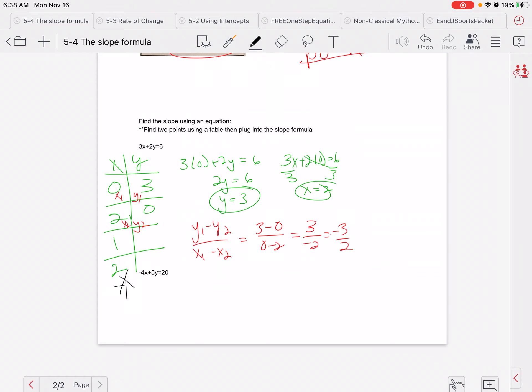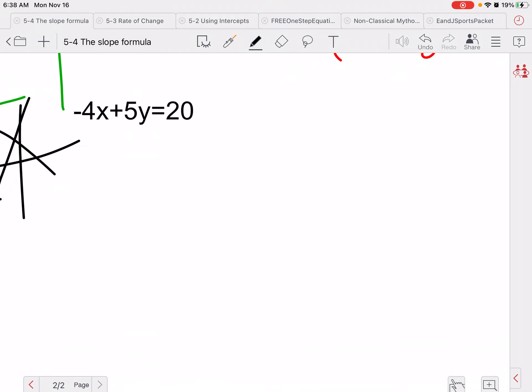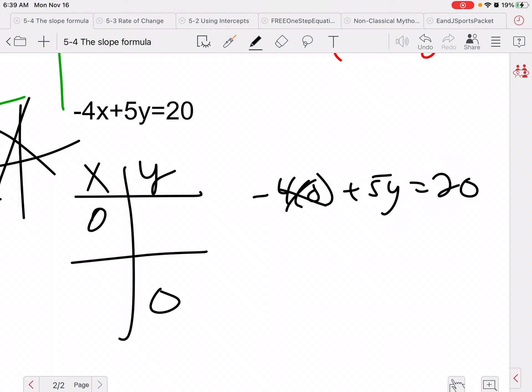Alright. Go ahead. I want you to go ahead and try this next one. See what you get. So again, I'm going to make a table. You can choose any two values, but I like the zeros for x's and y's. So we have negative 4 times 0 plus 5y equals 20. This goes away. Divide by 5. Y equals 4.